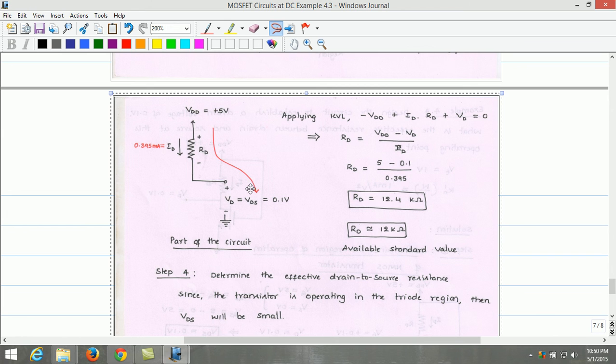For this portion of the circuit, if we can apply Kirchhoff voltage law, which gives minus VDD plus ID times RD plus VD or VDS which is given as equal to 0. Rearranging this, RD is found to be VDD minus VD divided by ID. Substituting the values of VDD, VD and ID, RD is found to be 12.4 kilo ohm.